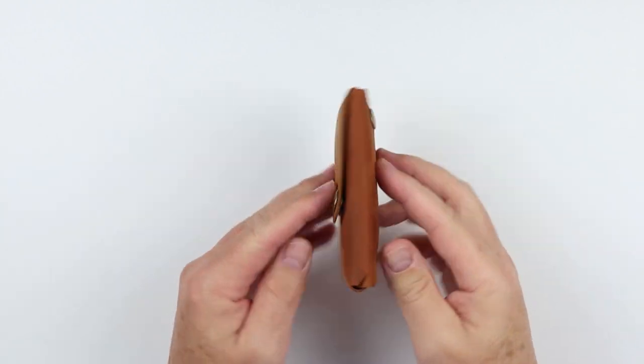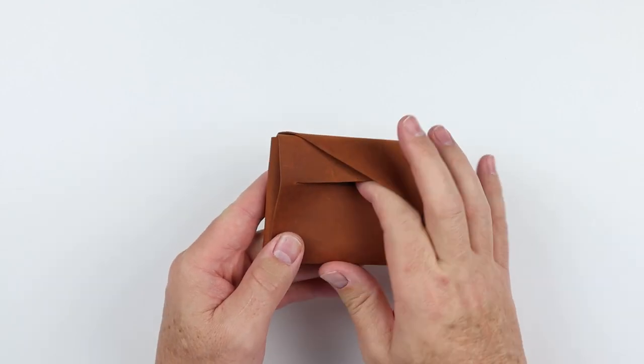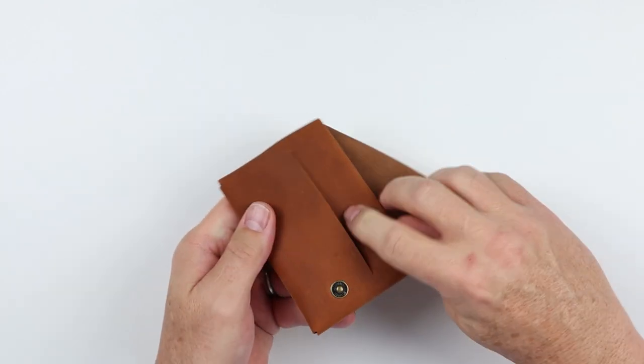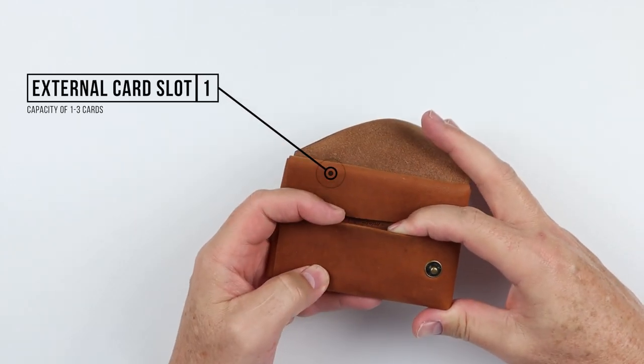We see nothing here on the front. We go to the back and we immediately see a card slot right here. If we unsnap this, we have one external card slot. This is a capacity of one to three cards.